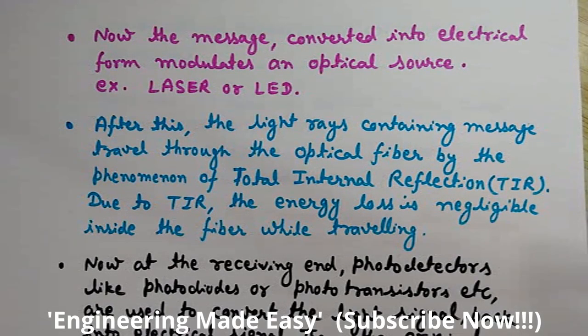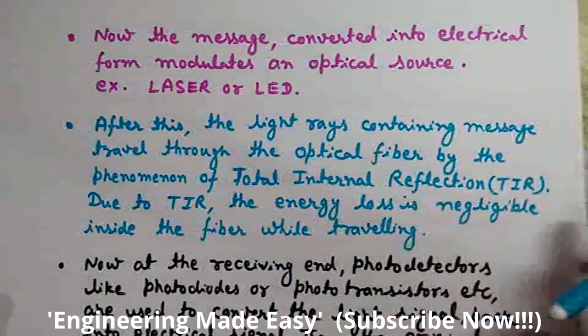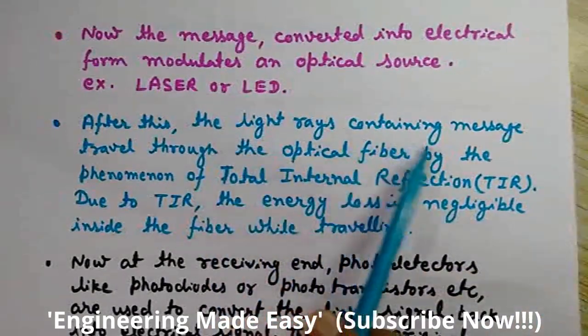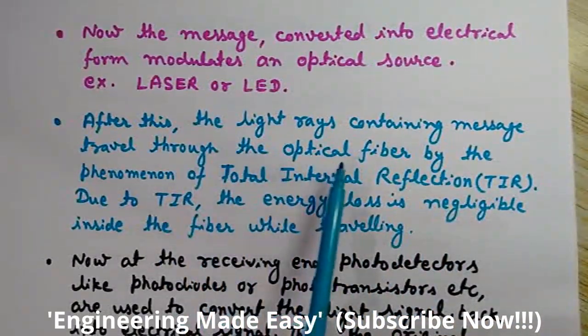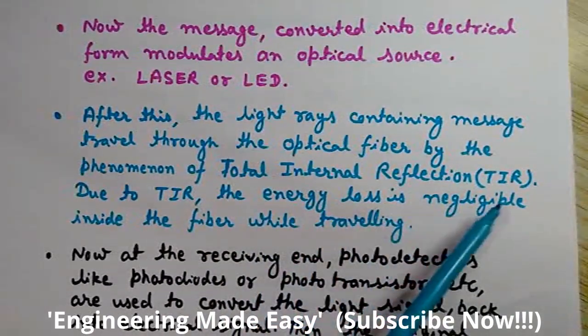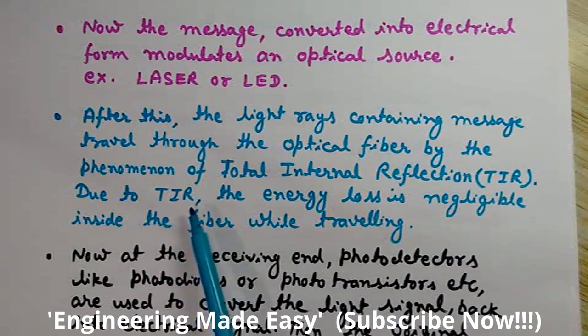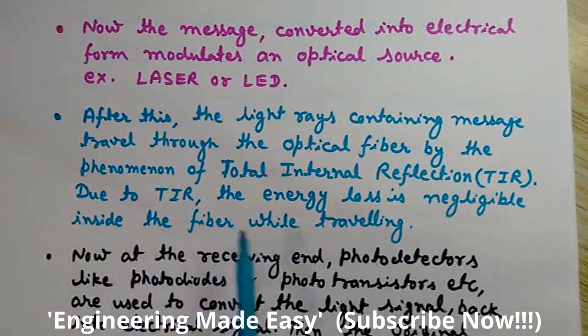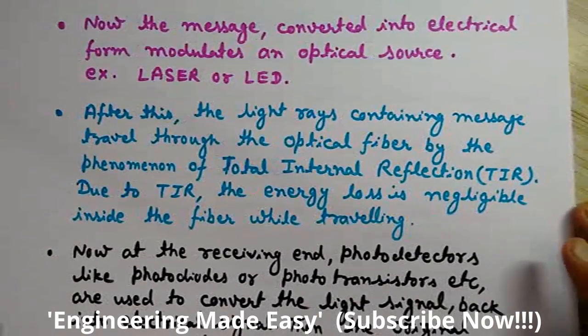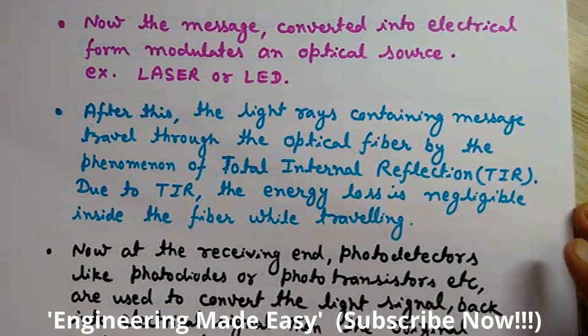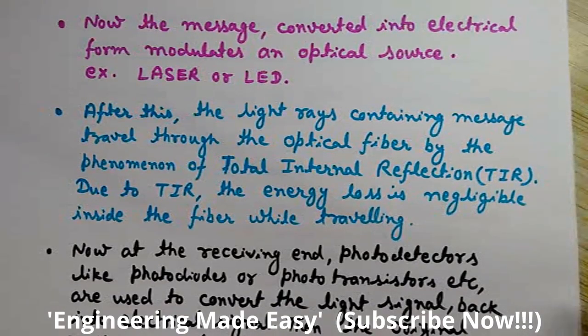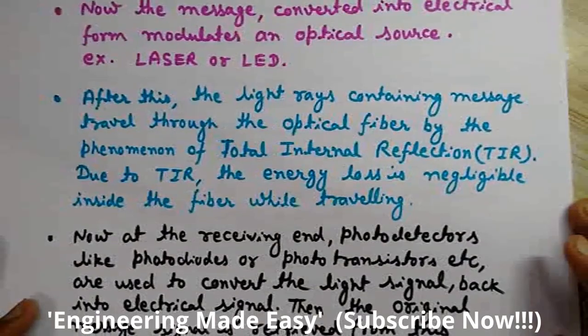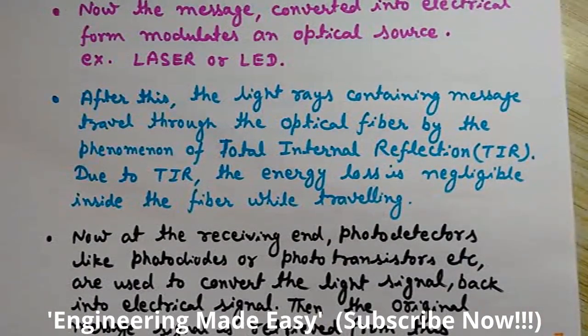After this, the light rays which contain the message travel through the optical fiber by the phenomenon of total internal reflection. Due to TIR - total internal reflection - the energy loss is negligible inside the fiber while traveling. That's the beauty of optical fibers - there are negligible losses as total internal reflection ideally has no loss because it gets totally internally reflected. Ideally no part escapes. In practice there are some losses we will discuss, but ideally it is negligible or zero.